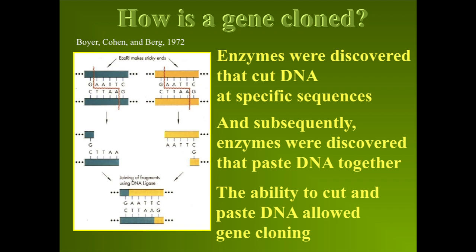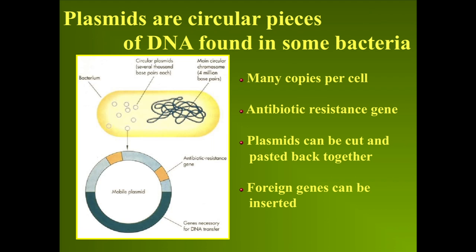Boyer, Cohen, and Berg were investigating enzymes that cut pieces of DNA in the early 1970s at the University of San Francisco. These enzymes isolated from bacteria would cut DNA at specific sequences. They were looking at circular pieces of DNA called plasmids and discovered an enzyme that would recognize a certain sequence in the DNA, cut it, open up that plasmid, and linearize it. They also knew there was another enzyme called a ligase capable of pasting DNA back together. Boyer, Cohen, and Berg discovered how to cut and paste DNA — almost like a Word document.